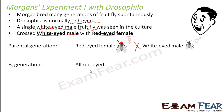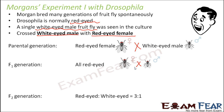He then allowed the F1 males and females to breed with each other. In the F1 generation both males and females were produced, all red-eyed. He crossed a red-eyed female of the F1 generation with a red-eyed male of the same generation to produce the F2 generation.